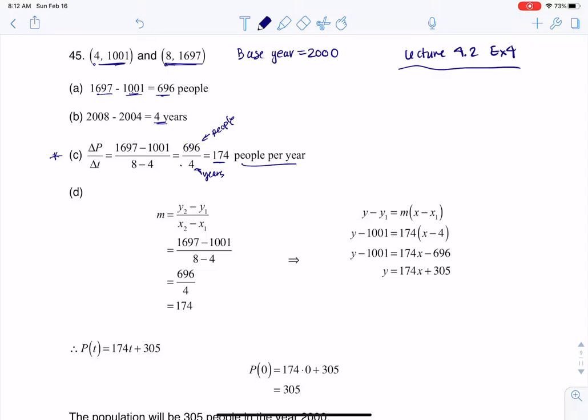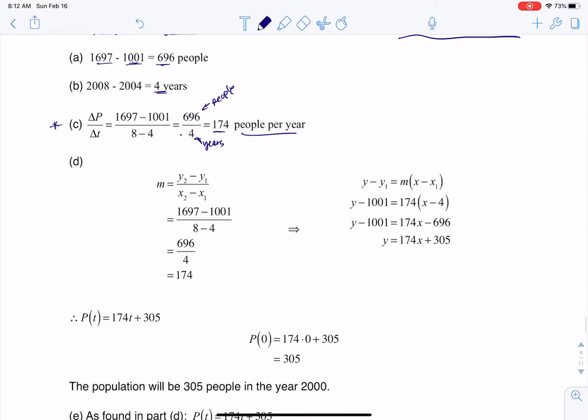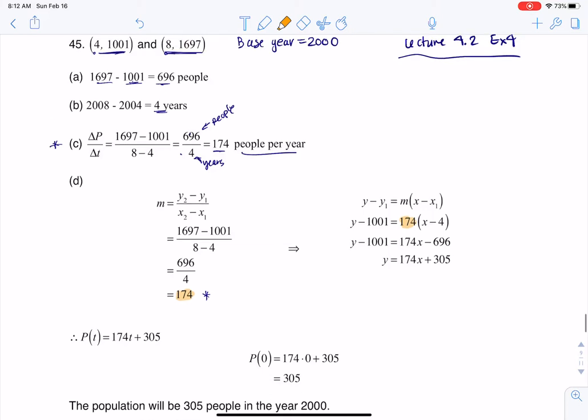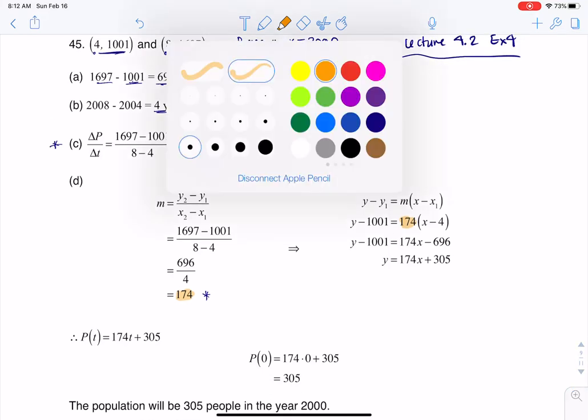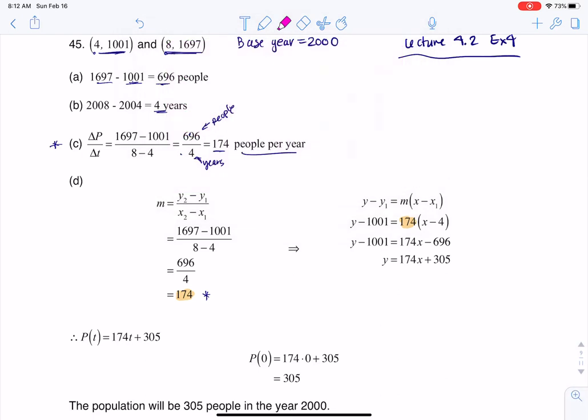If I want to find the population in the year 2000, right before this problem started, I want to get a function first. You see me again calculating the slope, same thing I did in Part C, but now I'm taking that slope, that 174, and taking one of my ordered pairs. I opted to use the ordered pair (4, 1001).